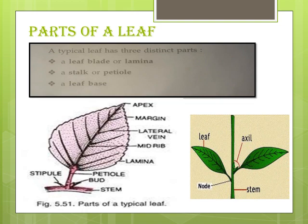Leaf apex and leaf margin. The leaf apex is also known as the leaf tip. The tip of the lamina is called the leaf apex — in the diagram, the leaf apex is marked at the pointed part at the corner of the leaf. And the edge on all the sides is called the leaf margin. You can see a wavy line on the sides — that is called the leaf margin.